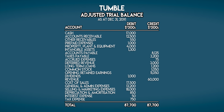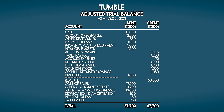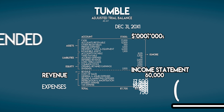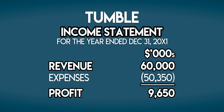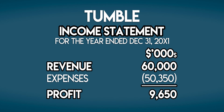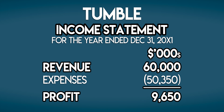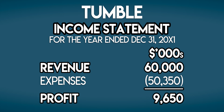This trial balance holds a complete list of Tumble's accounts and closing balances. Debit balances go in the left column and credit balances go in the right column. We can start by drawing a line, because accounts in a trial balance are usually arranged in order. Above this line, we have Tumble's assets, liabilities, and equity — these are all balance sheet accounts, which we can ignore. We're interested in the stuff below the line: Tumble's revenue and expenses, which are their income statement accounts. The basic income statement is Tumble's revenue minus its expenses. In this case, they earned $60 million in revenue and incurred $50,350,000 in expenses, leaving them with $9,650,000 in profit.